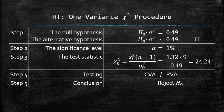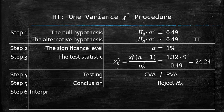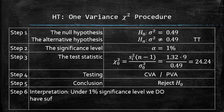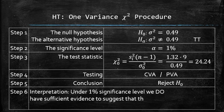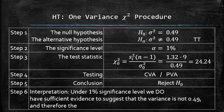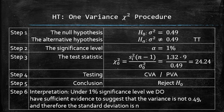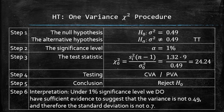Next, we are going to interpret the results. Under 1% significance level, we do have sufficient evidence to suggest that the variance is not 0.49 and therefore the standard deviation is not 0.7. The hypothesis test is complete.